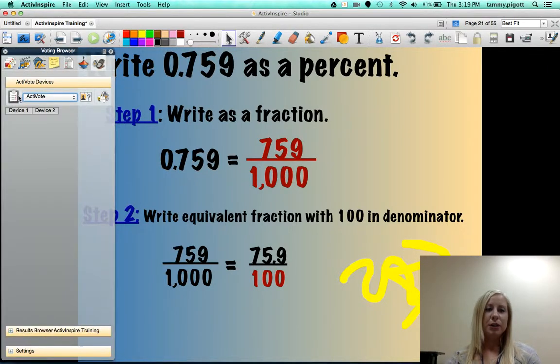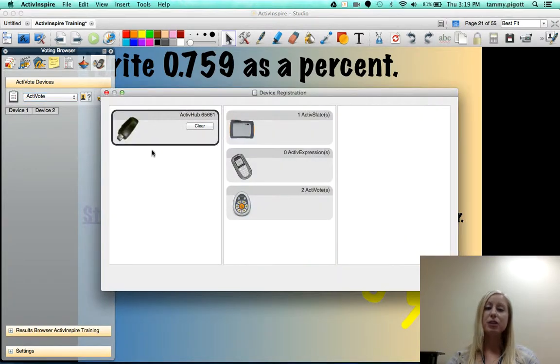What you're going to do is you'll click on again the device registration and you should see now that you have the updated driver. It should show all the options that you've got for this particular hub that's plugged in. So you can see here that I have one active slate registered to this.